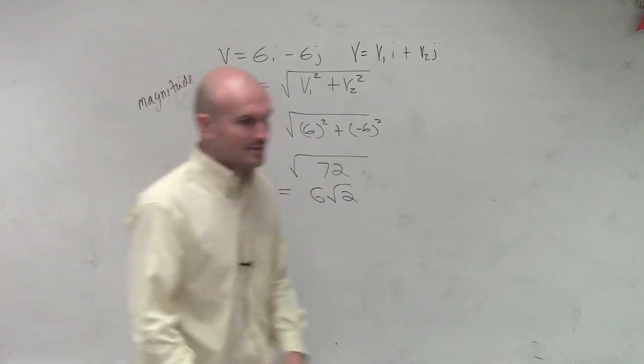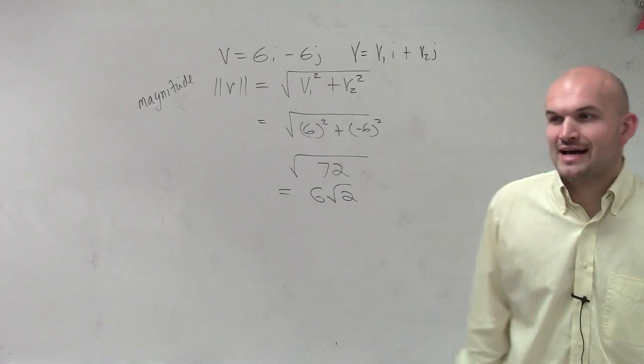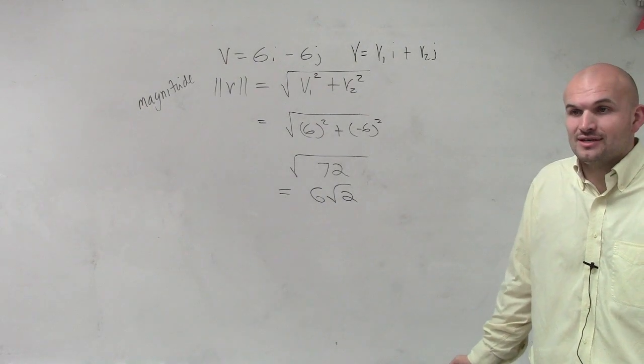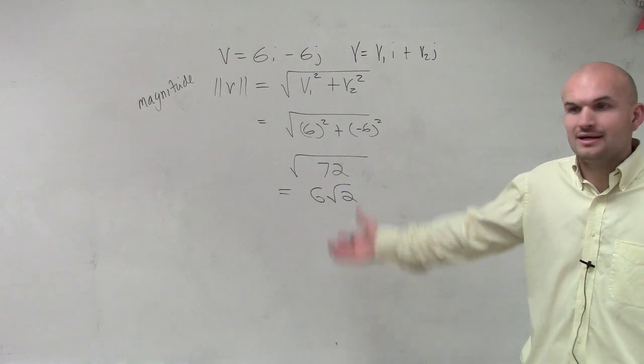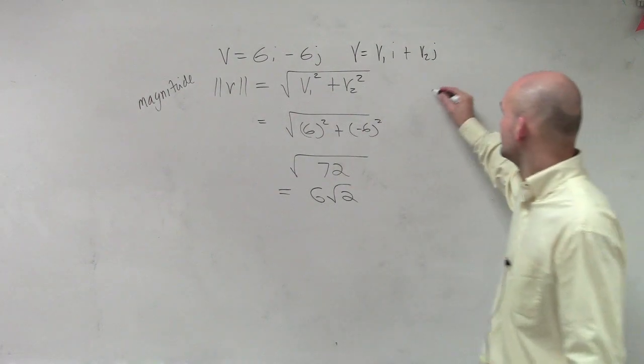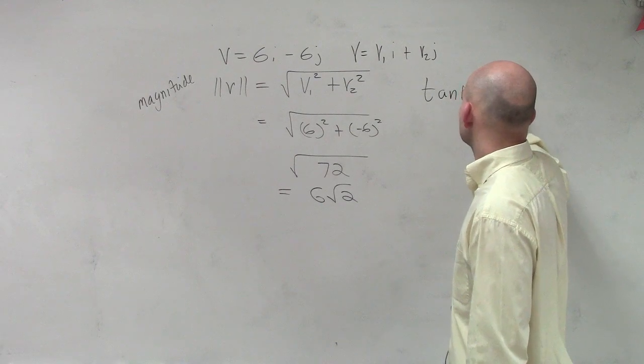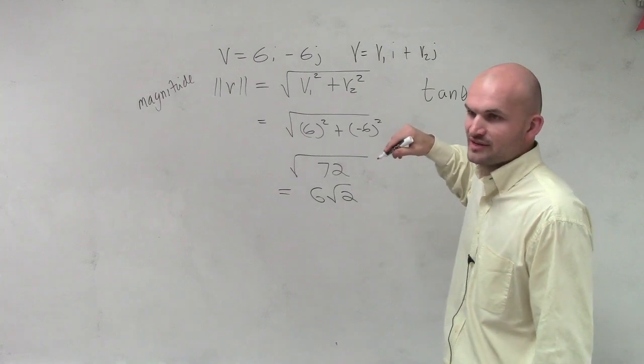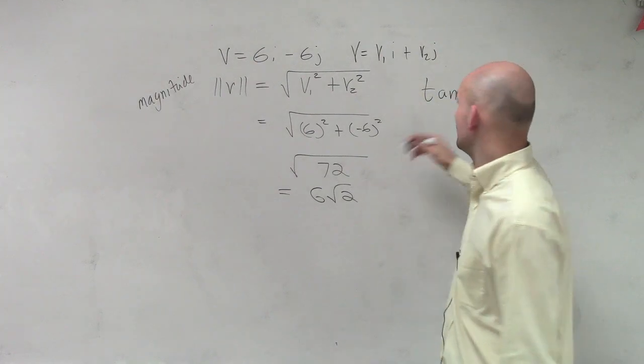Then, ladies and gentlemen, the next thing it says is find the directional angle. Well, remember, the direction of the angle is just your tangent of theta is equal to b over a, right? Direction of an angle equals tan of theta, which is equal to b over a, where b kind of represents your v2, and a represents your v1.